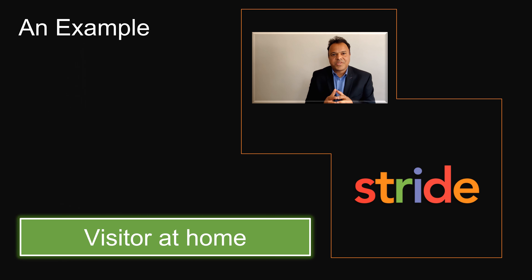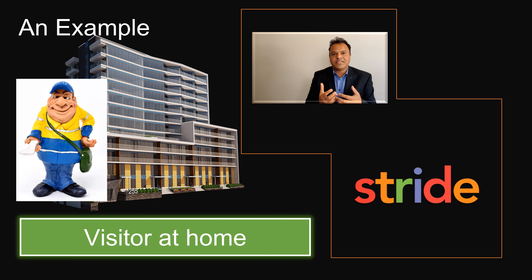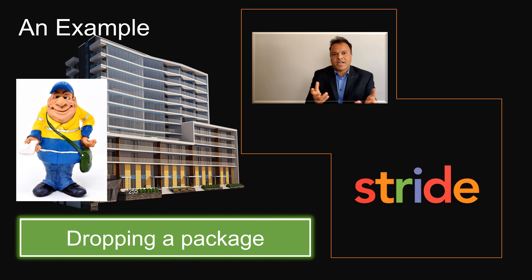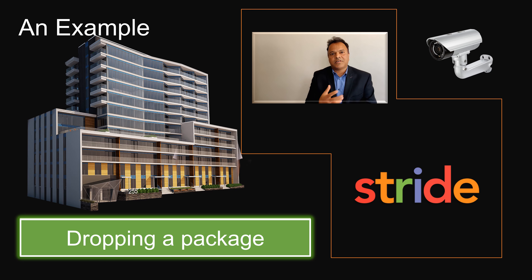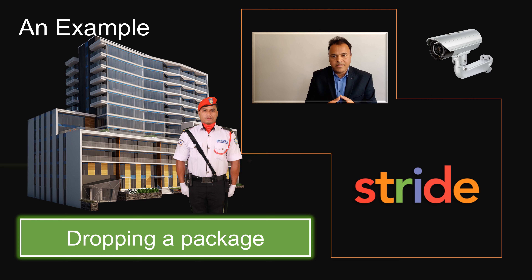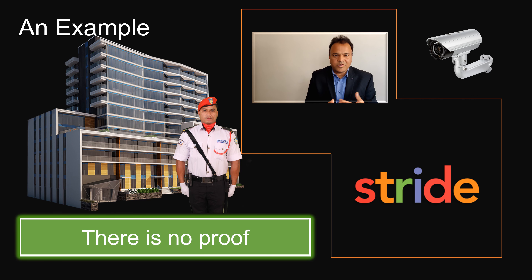In the real world, repudiation can be thought of as someone claiming they came to your house and dropped a package, but you cannot prove whether they actually came or not due to a lack of a CCTV camera, a register, a security guard, or someone at home to verify it. That is the closest real-world example.